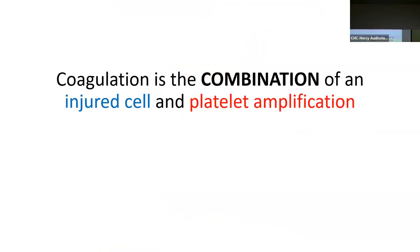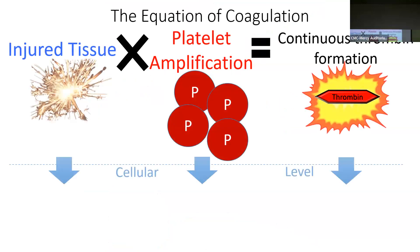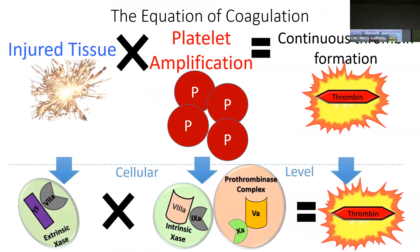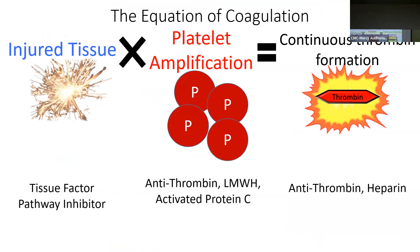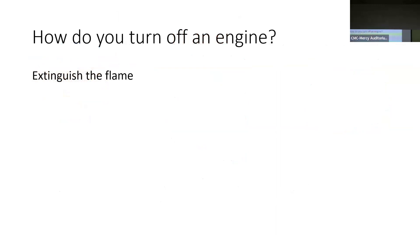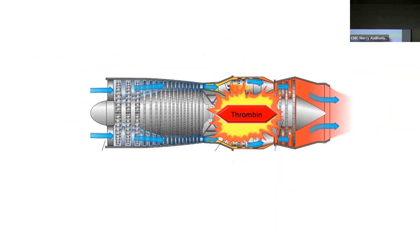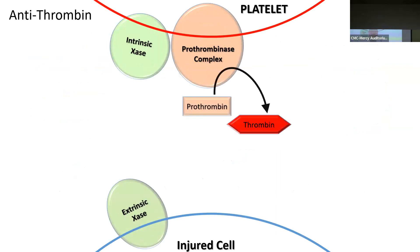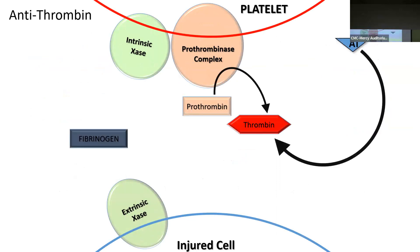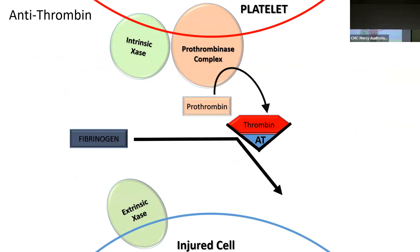Coagulation is really just a combination of injured cell and platelet amplification at its baseline. Understanding the cellular level ties in the pharmacology — why things work the way they do. Using our equation as a guide, we have three areas to attack: stop production of thrombin, stop platelet amplification, or prevent injured tissue. To extinguish the flame, antithrombin comes in — naturally present in our bodies — attacking both the prothrombinase and extrinsic tenase, binding to thrombin as a suicide inhibitor that prevents fibrinogen from being converted to fibrin.